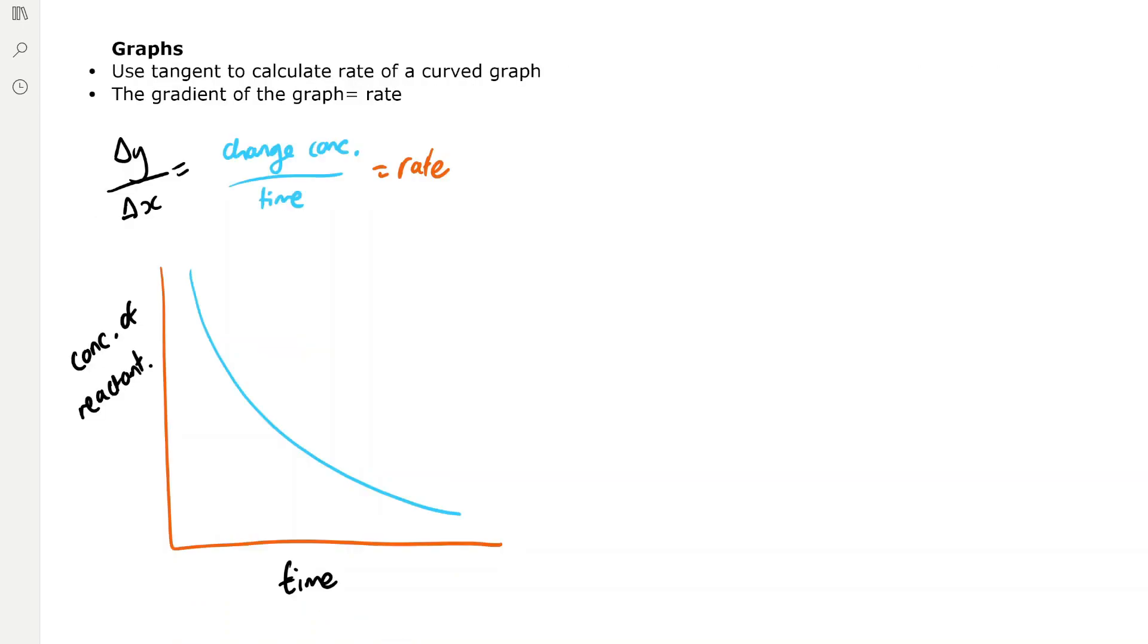For rate graphs, we can use tangents to calculate the rate of a curved graph, and the gradient of the graph is equal to the rate. As you can see, the change in y divided by the change in x means the change in concentration divided by the time, which is equal to the rate.